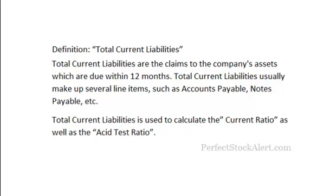Today we're going to be looking at the definition of total current liabilities. As we do in each one of these fundamental analysis tutorial videos, I'll give you the actual definition and then we'll go on to look at some examples and give you a little bit more insight into how it's actually used. Total current liabilities are the claims to the company's assets which are due within 12 months. Total current liabilities usually makes up several different line items such as accounts payables, notes payables, etc. Total current liabilities is used to calculate the current ratio as well as the asset test ratio.